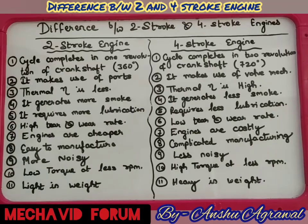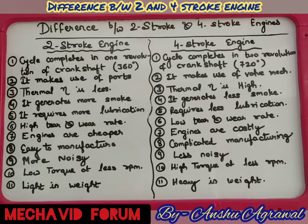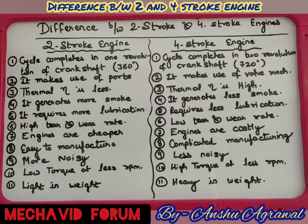Two-stroke engines are more noisy, whereas four-stroke engines are less noisy. In a two-stroke engine, the cycle completes in 360 degrees, so the piston has to move twice per crankshaft rotation, creating more noise. Additionally, less cooling is provided, which further increases noise. In four-stroke engines, proper stroke length and crank rotation are maintained, and a good cooling system is provided, resulting in less noise.